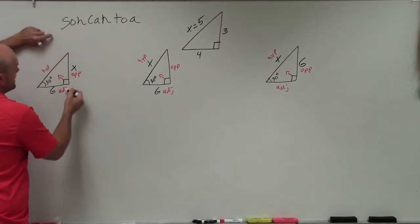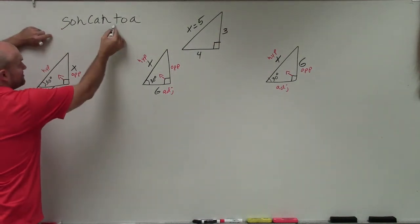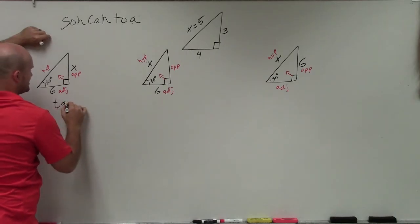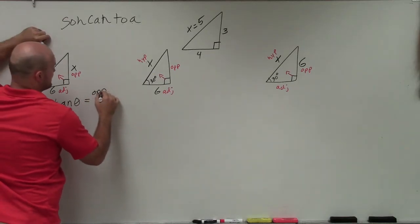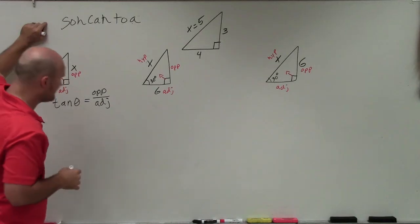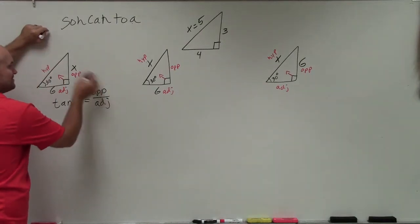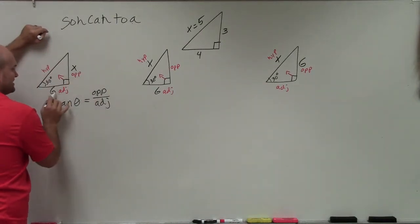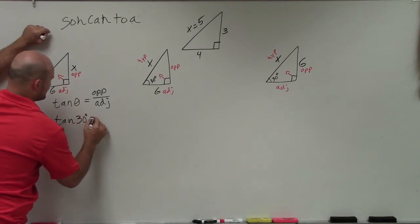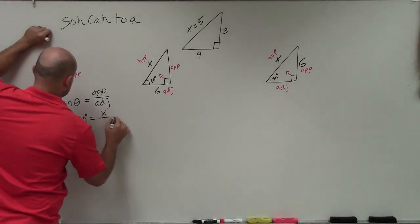For this one, I need to do opposite over adjacent. That's going to be tangent is opposite over adjacent. I'm just going to say tangent of an angle theta, because tangent is always of an angle, is your opposite over your adjacent. That is our definition of tangent function. Now I know the opposite is x, adjacent is 6, and my theta, which is my angle, is 30 degrees. So I'll just enter in that information, tangent of 30 degrees equals x over 6.